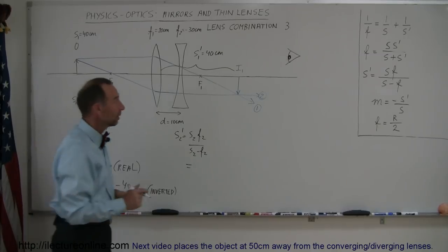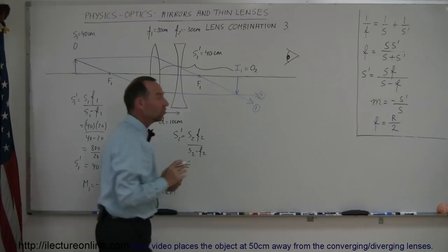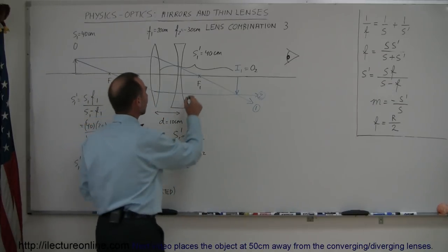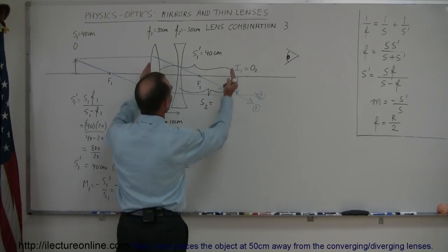So s2 is... oh we don't know yet, where is s2? Well it turns out that image 1 now becomes object 2, and so the distance from the object to the lens would now be this distance right here and that distance is called s2.